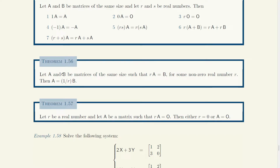One theorem is that if you have a number R multiplied by a matrix A and it is equal to a matrix B, and you want to find A — in other words, make A alone on the left-hand side — if R is not zero, you can do it very naturally by dividing everything by R and writing 1 over R times B on the other side.